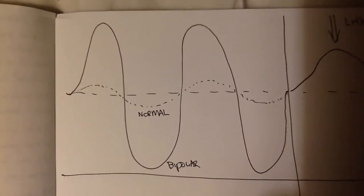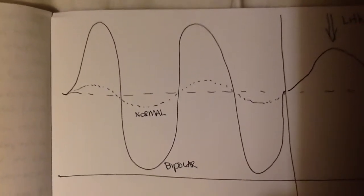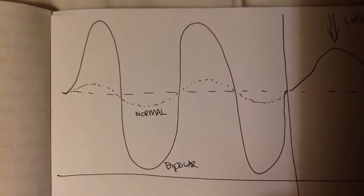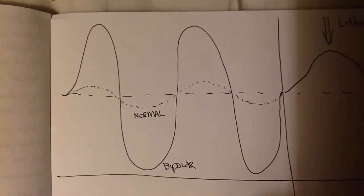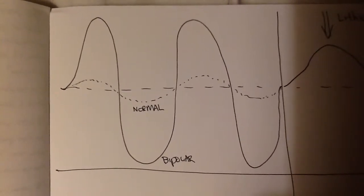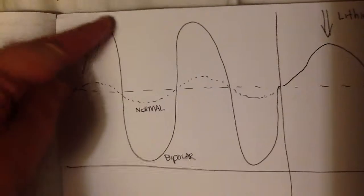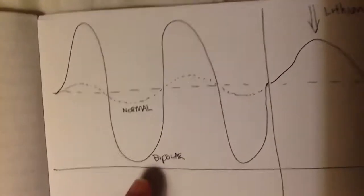In a normal person, you have fluctuations in mood up and down, the dotted line here. In a bipolar person, you have extreme fluctuations of mood from mania to depression, so mania being up here, depression being down here.